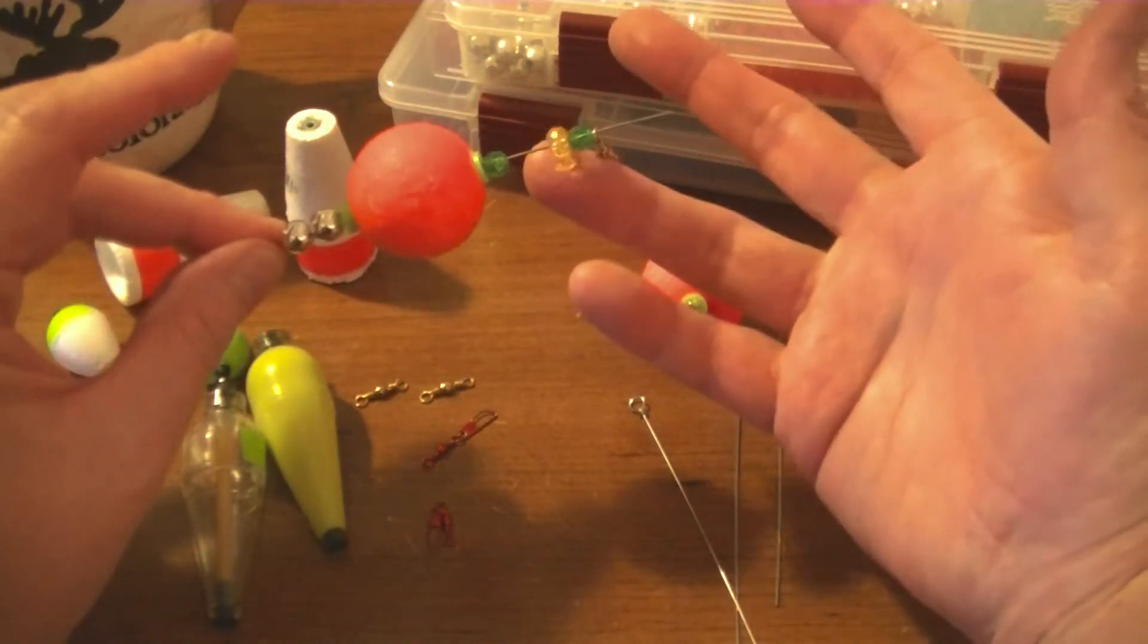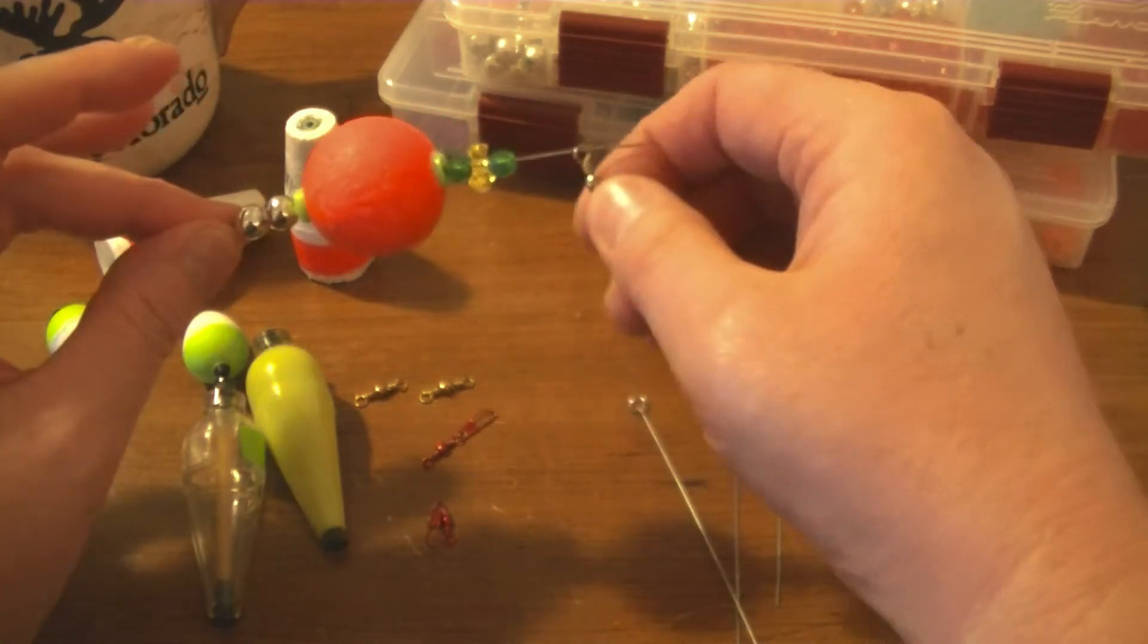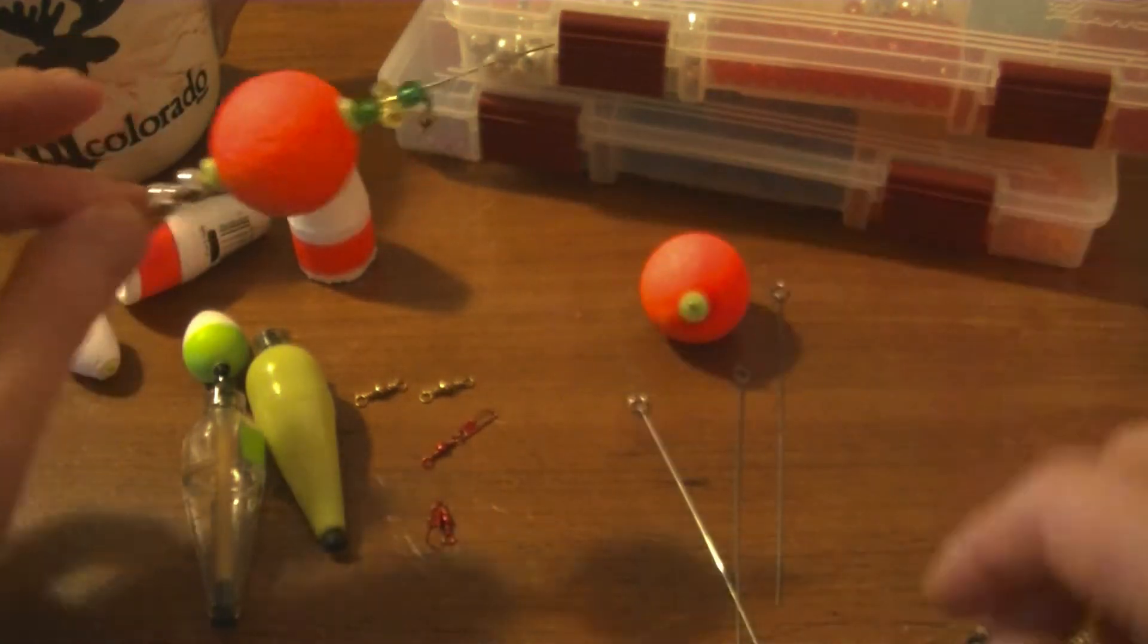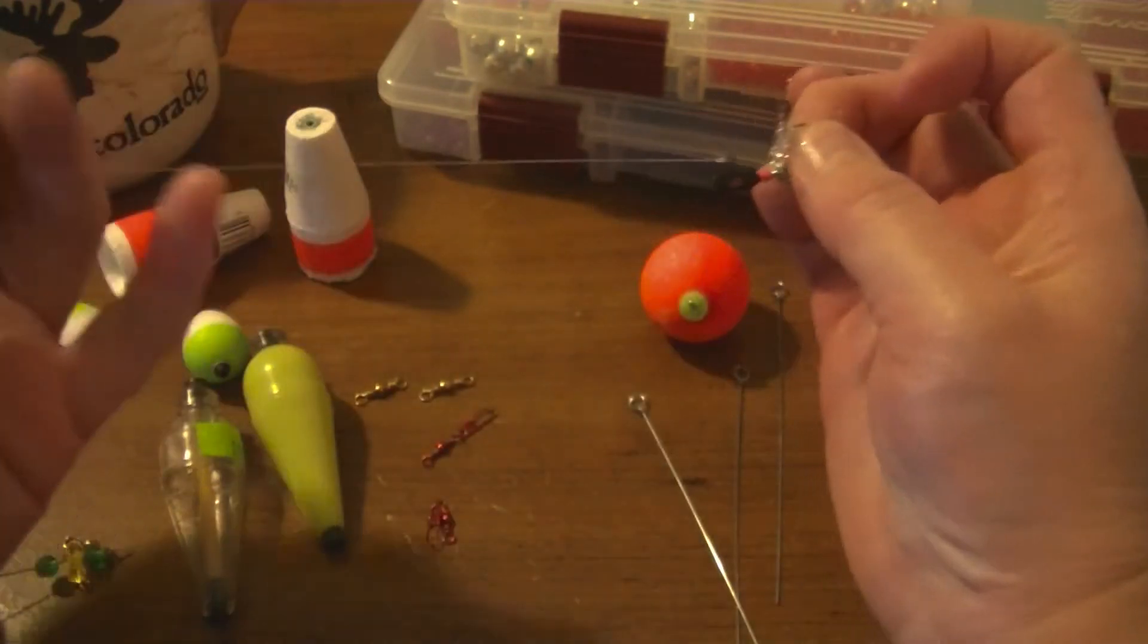Now when they're fishing them in the ocean they have a length of line coming off of the barrel swivel and they have a lure on the end of the line.